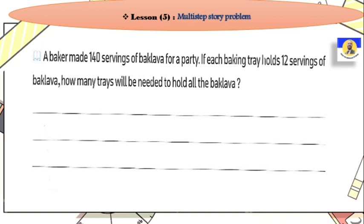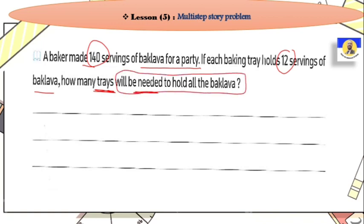In the first question, a baker made 140 servings of Baklava for a party. If each baking tray holds 12 servings of Baklava, how many trays will be needed to hold all of them? You can see every tray holds 12, so how many trays to finish all 140 of them.